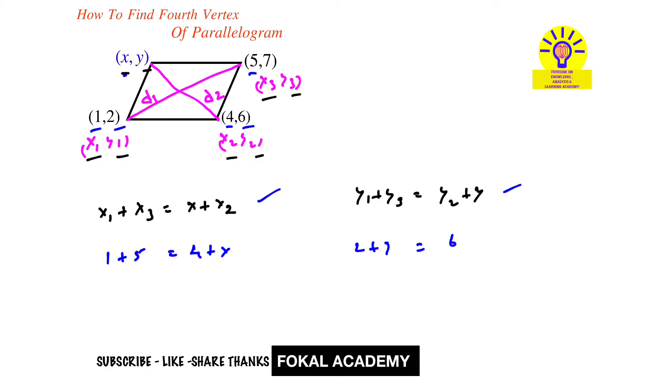From this we get x equals 2 and y equals 3. So the coordinates are (2, 3), and this is the fourth vertex of the given parallelogram.